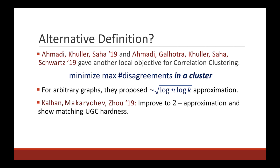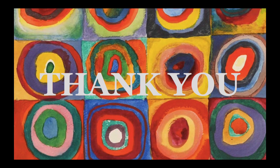Finally, there is another version of this problem which looks at the maximum total disagreement inside a single cluster instead of over the entire graph. For this objective, we find a 2-approximation, which improves over the previous log of n approximation. For a detailed description of our algorithms, please check out our paper. Thank you for watching.